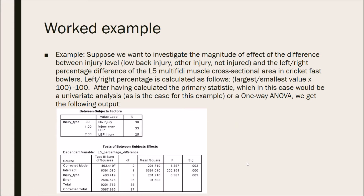Going through a worked example — suppose we want to investigate the magnitude of effect of the difference between injury level, which has three levels: low back injury, other injury, and not injured, and the left-right percentage difference of the L5 multifidus muscle cross-sectional area in cricket fast bowlers. The left-right percentage is calculated as the largest divided by the smallest value, times 100, minus 100. After having calculated the primary statistic, which in this case would be a one-way ANOVA, we get the following output generated using SPSS.